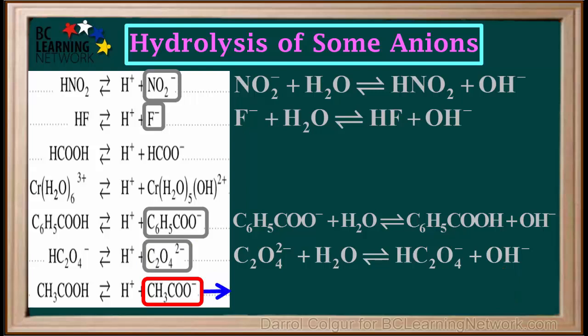The last equation we'll do is the hydrolysis equation for the acetate or ethanoate ion, CH3COO-. CH3COO- hydrolyzes by removing a proton from water to form its conjugate acid, CH3COOH, and a hydroxide ion.